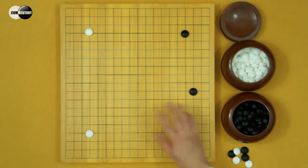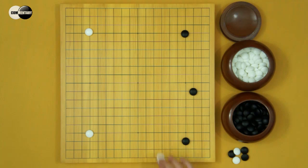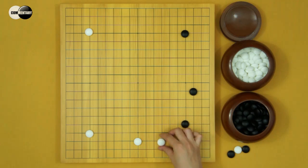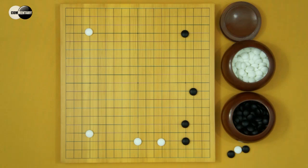So in this fuseki, White usually kakari here or here. Then Black can simply shimari. White extends. This fuseki is playable. But this exchange, locally is bad for White. If Black jumps here, Black will get a lot of territory.